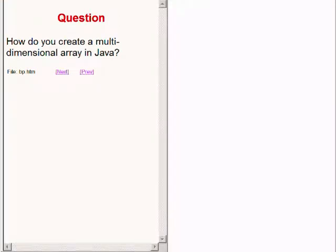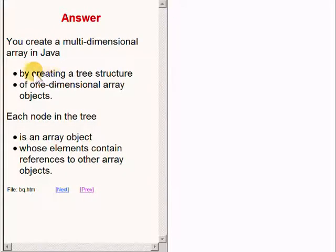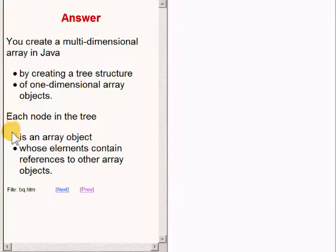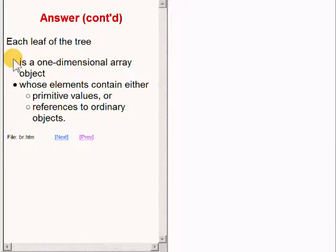Here is a question for you: how do you create a multi-dimensional array in Java? The answer is that you create a multi-dimensional array in Java by creating a tree structure of one-dimensional array objects. Each node in the tree is an array object whose elements contain references to other array objects. Each leaf in the tree is a one-dimensional array object whose elements contain either primitive values or references to ordinary objects.